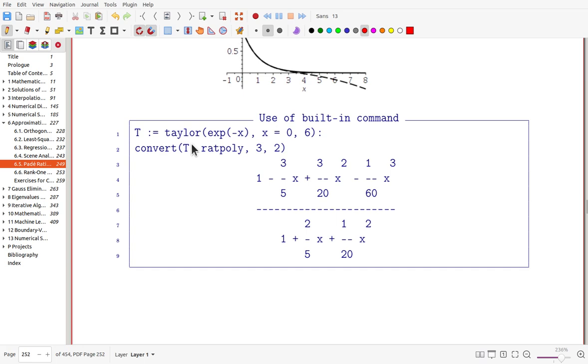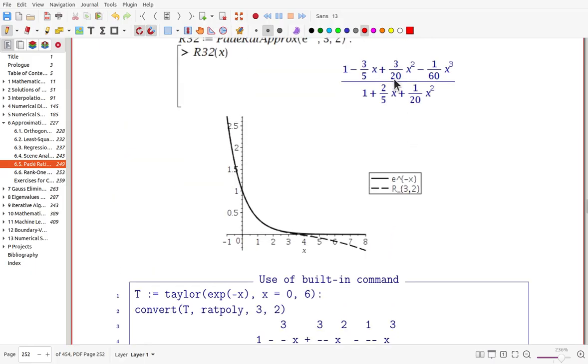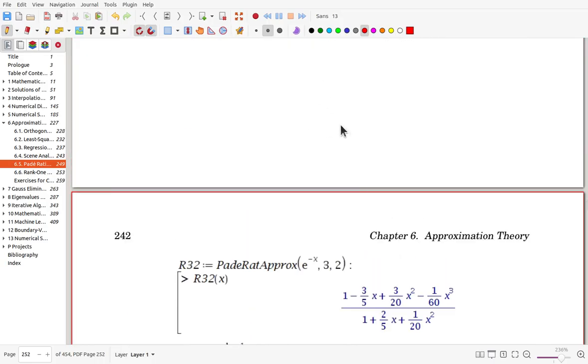Now, by using the built-in function, and here, now, after getting Taylor, and for the Taylor series, we can convert to get rational polynomial, which is Padé approximation. As you can see here, this is the output, and which is the same as this one. So our implementation is correct.